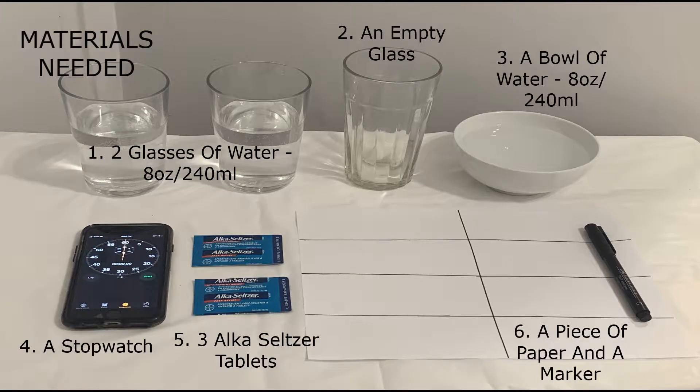For this experiment, you will need two glasses of water that are filled 8 ounces or 240 milliliters, an empty glass, a separate bowl of water that is 8 ounces or 240 milliliters filled, a stopwatch, three Alka-Seltzer tablets, a piece of paper, and a marker.